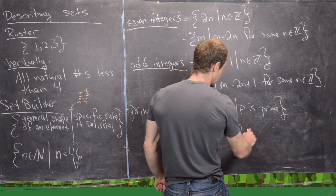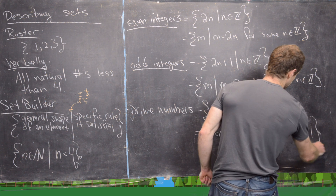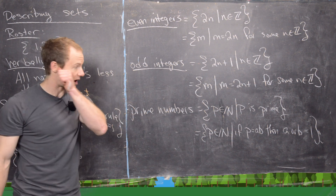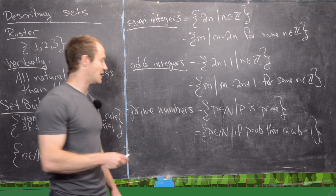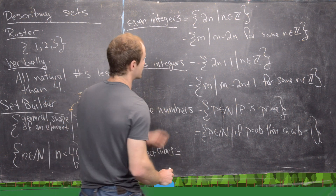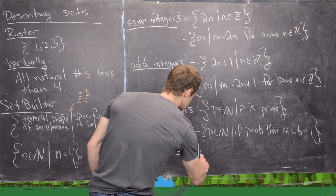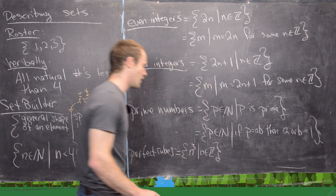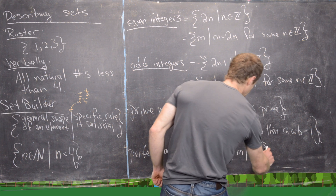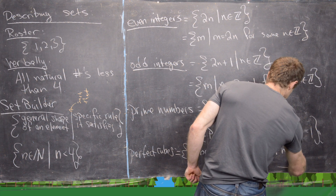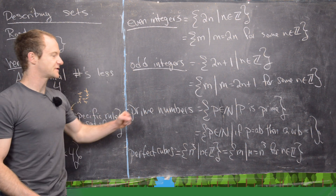Another definition for primes in set builder notation: {p ∈ ℕ | if p = a·b then a or b equals 1} — meaning if you factor a prime into two numbers, one must be one. For perfect cubes, we can write {n³ | n ∈ ℤ} or equivalently {m | m = n³ for some n ∈ ℤ}. Those are several ways to practice set builder notation.